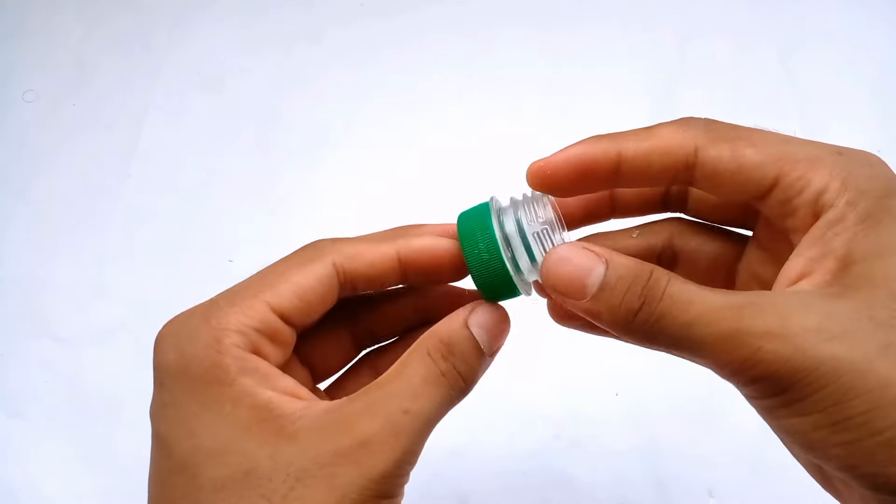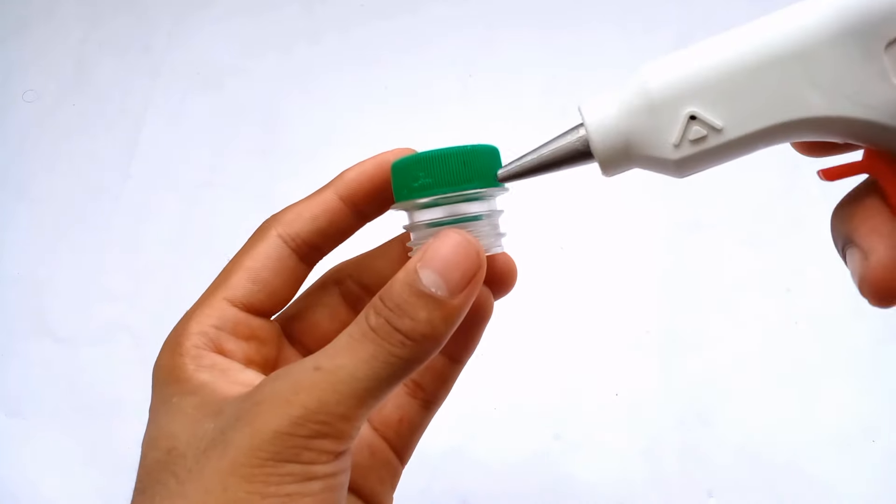Cut out the upper part of a bottle with a cutter, then stick one of the bottle caps onto it.